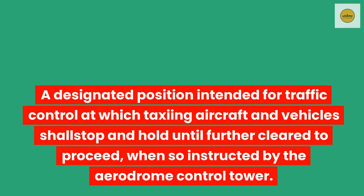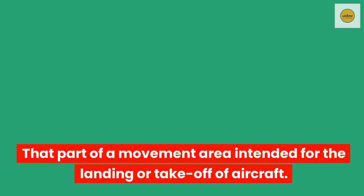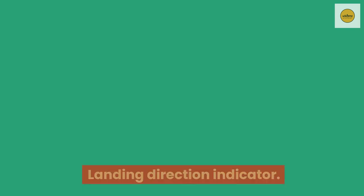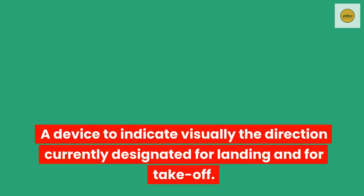Intermediate holding position. A designated position intended for traffic control at which taxiing aircraft and vehicles shall stop and hold until further cleared to proceed, when so instructed by the aerodrome control tower. Landing area. That part of a movement area intended for the landing or takeoff of aircraft. Landing direction indicator. A device to indicate visually the direction currently designated for landing and for takeoff.